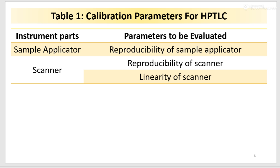This table 1 depicts calibration parameters for HPTLC system. For sample applicator, the parameter evaluated is reproducibility of sample applicator. And for scanner, the parameters evaluated are reproducibility of scanner and linearity of scanner for both UV light and fluorescence light.